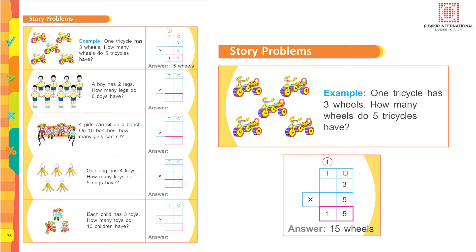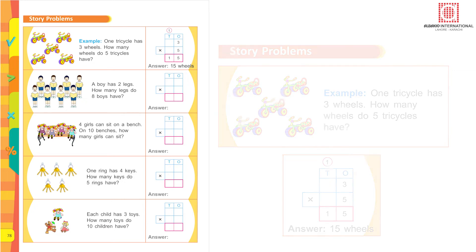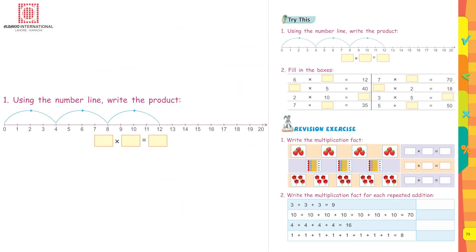You write 5 and carry forward 1, making 15. So the answer is 15 wheels. This is how you do these sums — use this framework to form the sum. Page 79: using the number line, write the product.